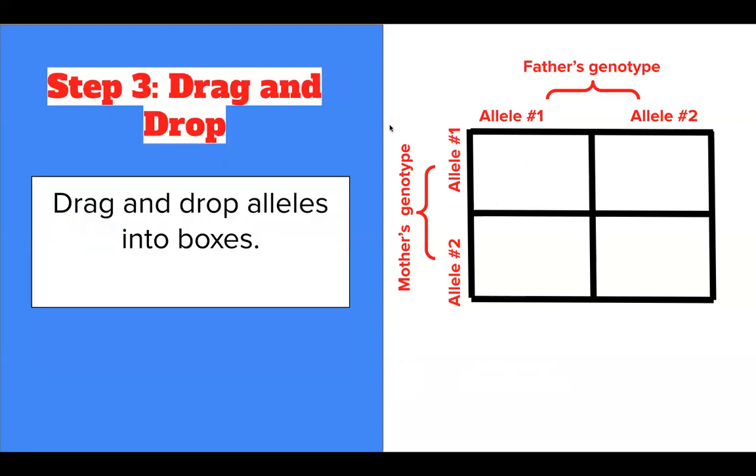Step three is we then drag and drop. What we do is we drag these alleles that we wrote on the side into the boxes within each row. We're going to drag the alleles over and we're going to write them within these boxes. We're also going to drop the alleles from the top of the square down into each box within its column.